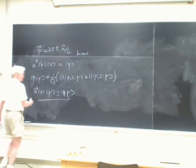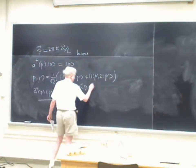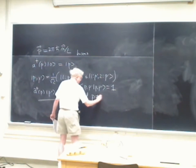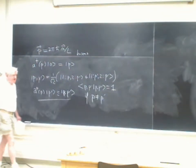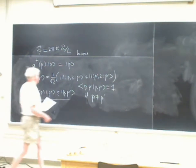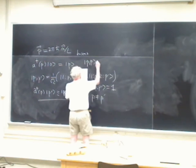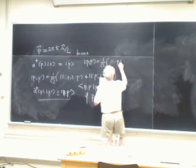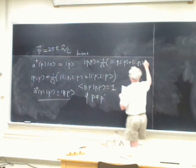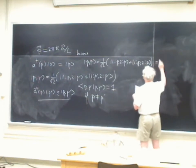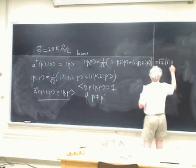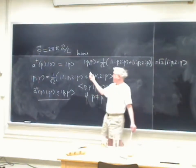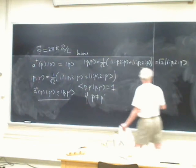This state |P, P'⟩ is normalized if P is not equal to P'. But if P equals P', then the state |P, P⟩ equals 1/√2 times (|1:P, 2:P⟩ + |1:P, 2:P⟩), which is √2 |1:P, 2:P⟩. So this state is not normalized when P equals P'; instead it has norm √2.